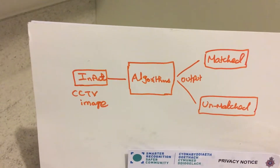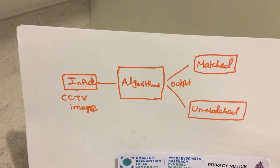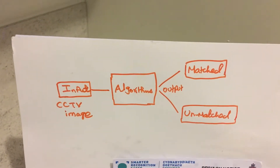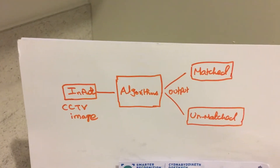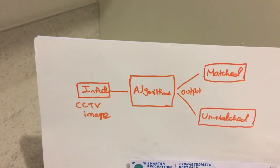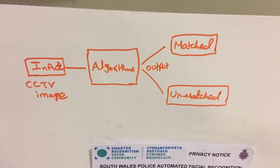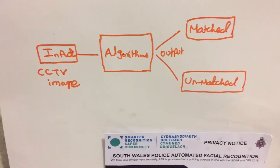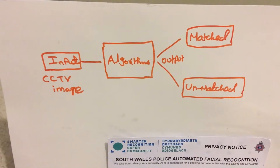The police department has a list of wanted persons. What they do is take the CCTV footage and use it as input. The data structure and artificial intelligence techniques process it to check whether any CCTV image matches with a wanted person. If matched, it goes into a separate matched list; if not matched, it goes into the unmatched list.